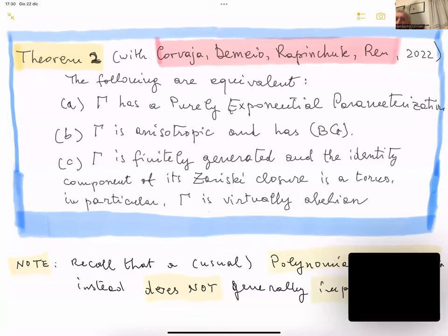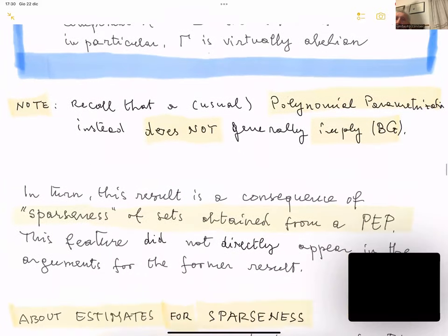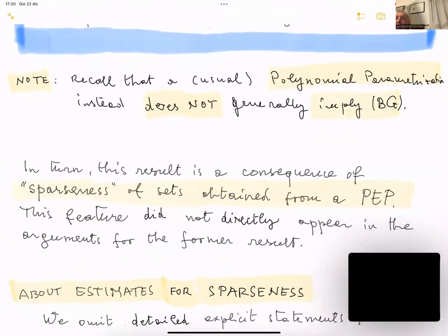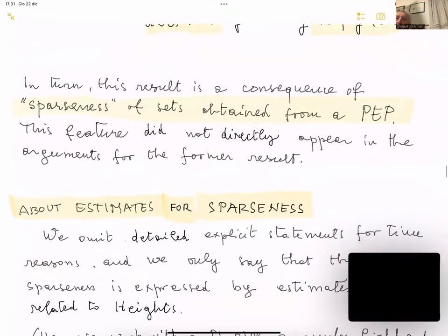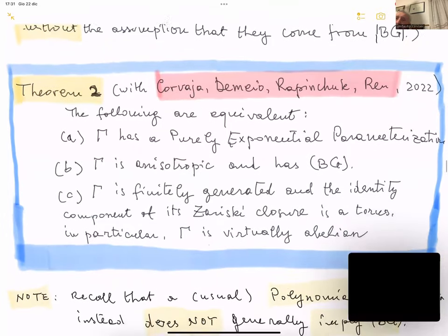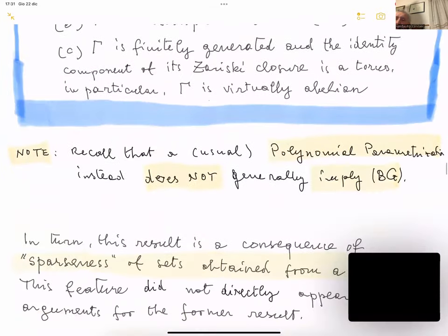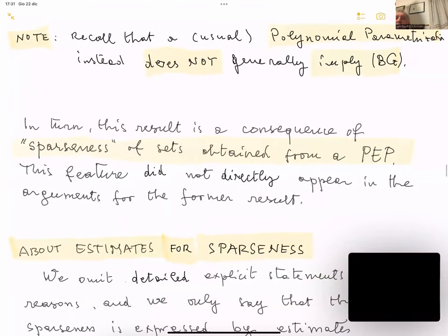The third equivalence implies in particular that Γ is virtually abelian. A usual polynomial parametrization does not generally imply bounded generation. This theorem, more precise than the previous one, is a consequence of the sparseness of sets obtained from a purely exponential parametrization — a feature of sparseness that did not directly appear in the arguments for the former results.